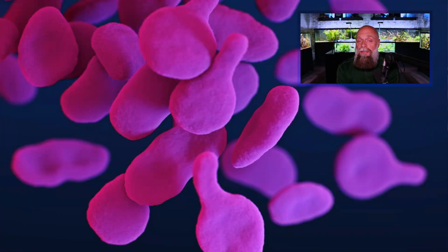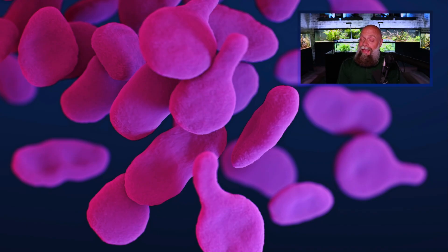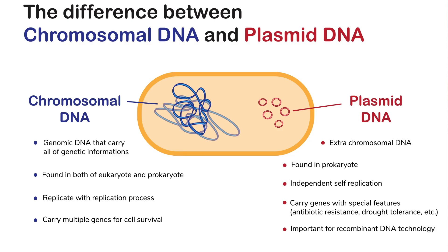Mycoplasma bacteria are interesting because they lack a cell wall, making them one of the few bacteria without one. This makes mycoplasma infections difficult to treat because many antibiotics that target the cell wall don't work. To recap plasmids: the host chromosome houses all genetic information necessary under normal conditions, while plasmid DNA is extra-chromosomal, replicates independently, and is most important for traits like antibiotic resistance. Plasmids can be transferred between cells.